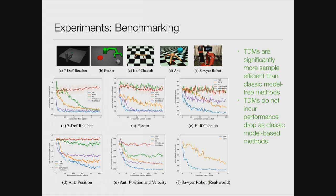For results, we tested on benchmark domains for continuous control. DDPG (orange) converges very nicely to the best performance but is much slower than model-based (purple) or TDM. Model-based converges very fast and accurately for simple domains like Reacher, but for difficult tasks like Ant with tricky locomotion dynamics, it converges quickly but with bias — limiting final policy performance. Overall, TDM matches the sample efficiency of model-based methods in all tested cases while converging to the same final performance as model-free methods.